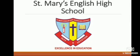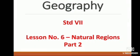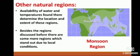Welcome dear children. Geography Standard 7th, Lesson No. 6, Natural Regions Part 2. Availability of water and temperatures determine the location and extent of natural regions. Besides the regions discussed before, there are some more regions which stand out due to local conditions. They are the monsoon, the Mediterranean, and the West European regions. We will discuss about these regions in this lecture.